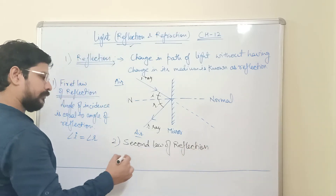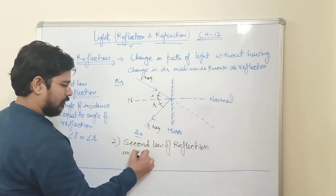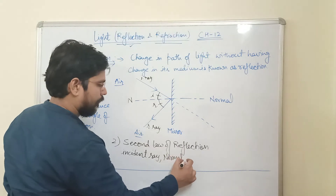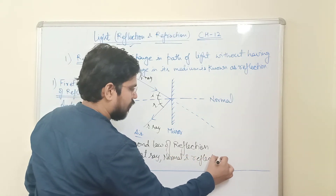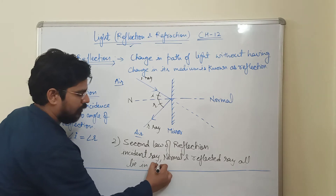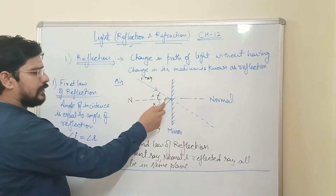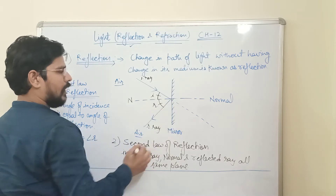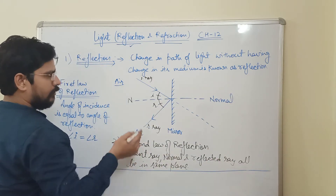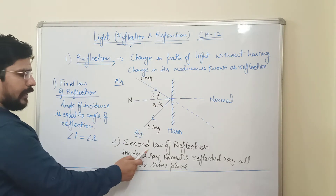The second law of reflection states that the incident ray, the reflected ray, and the normal all lie in the same plane. As I have drawn all three in this plane of the board, practically also the incident ray, normal, and reflected ray all lie in the same plane — that is the second law of reflection.